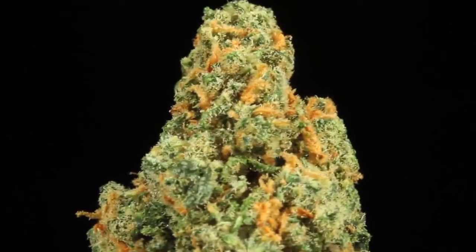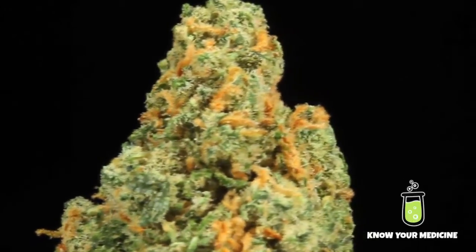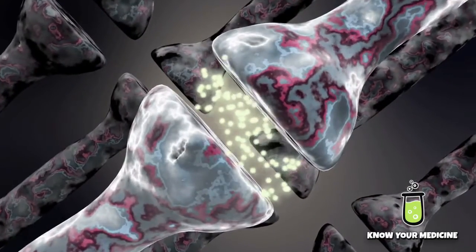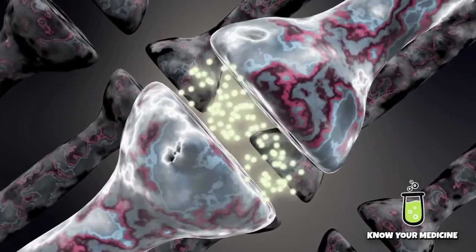Terpenoids on their own have been found to have different medical benefits. For example, beta-caryophyllene is one of the few non-cannabinoids known to activate the CB2 receptor. It's also known as an anti-inflammatory.